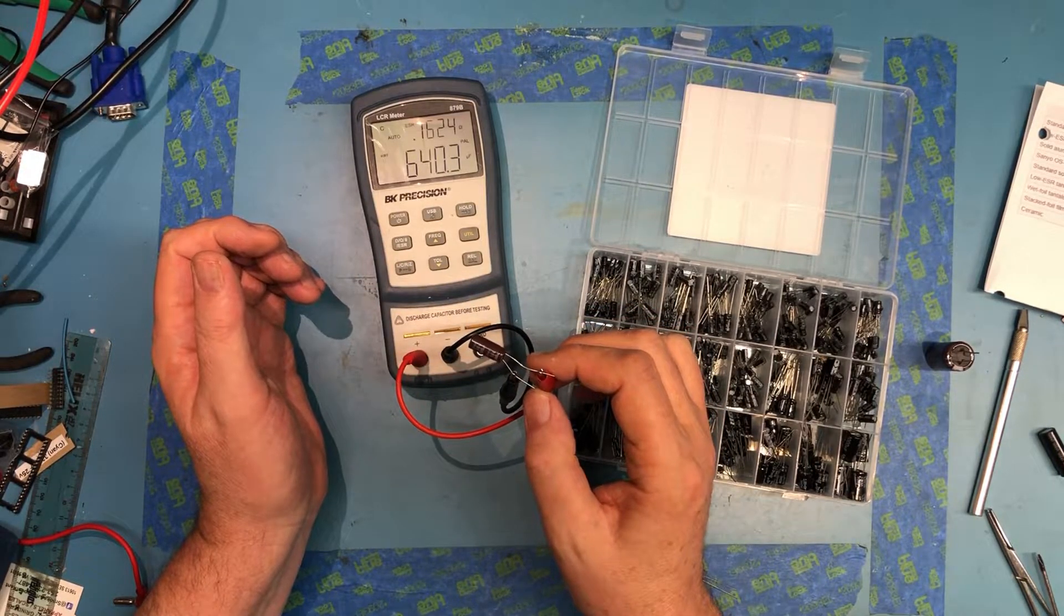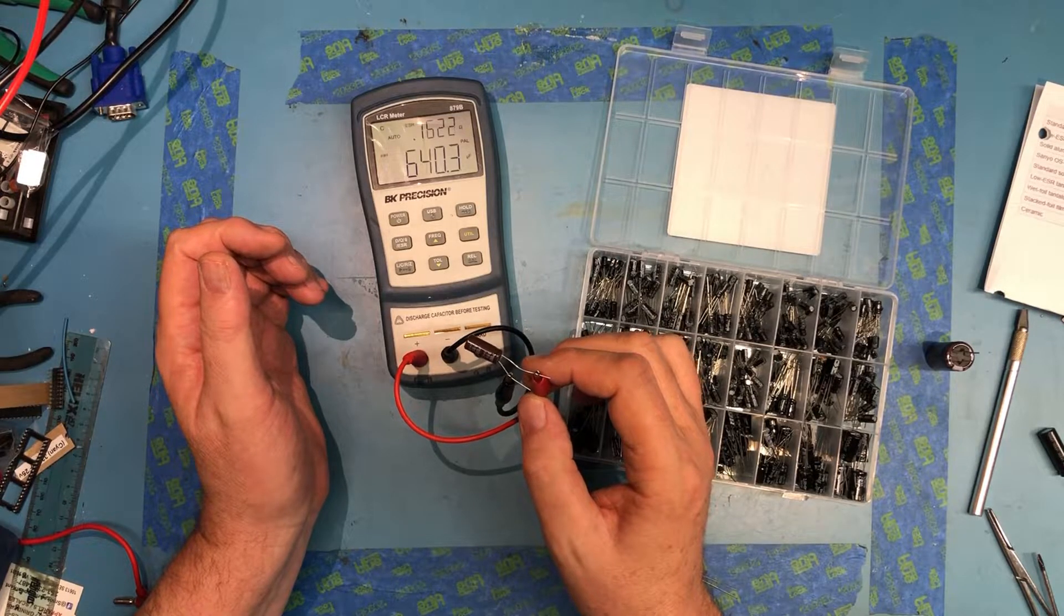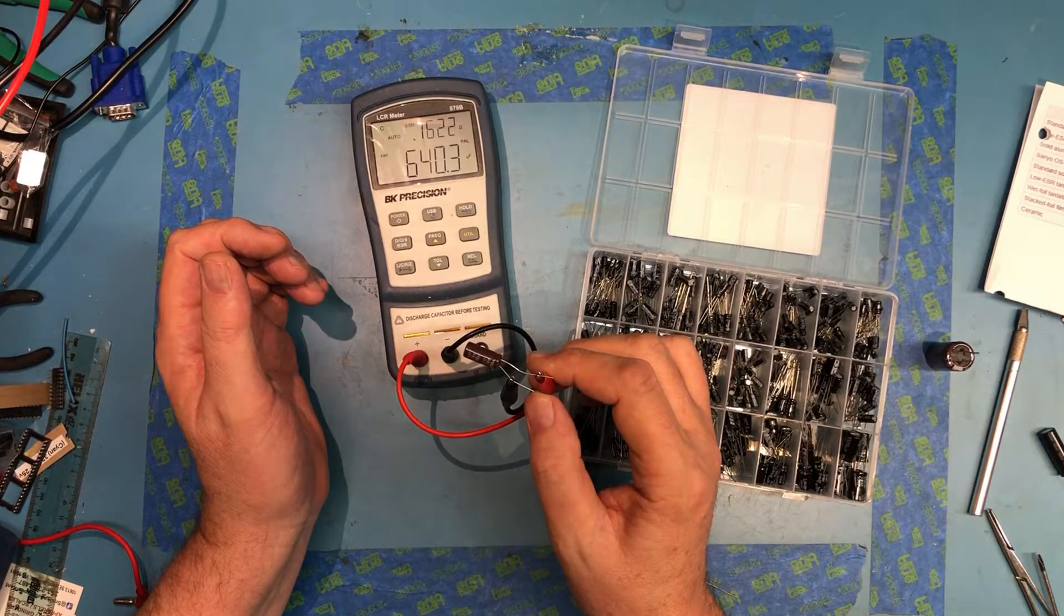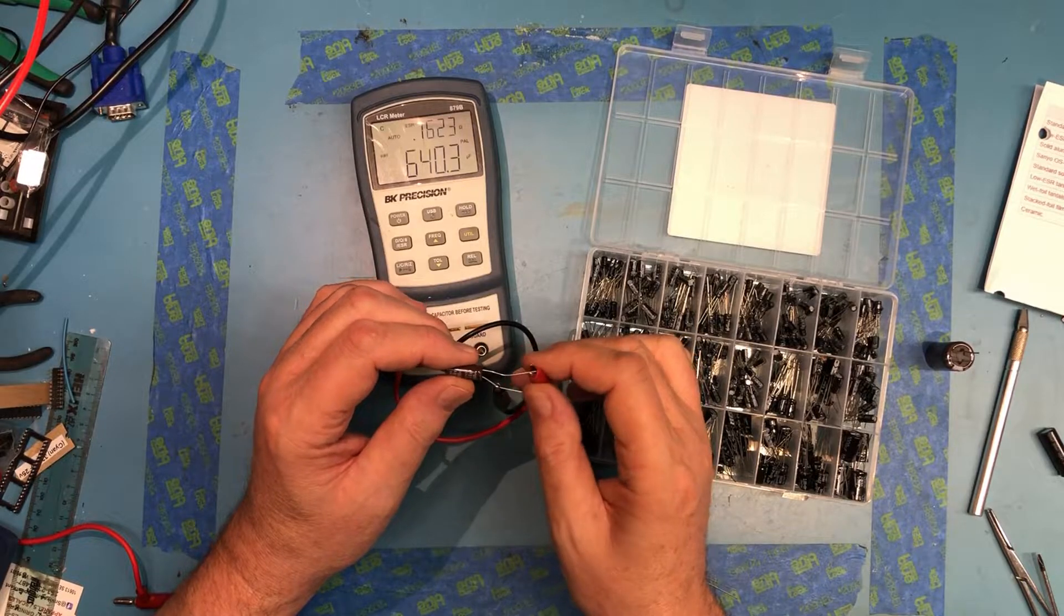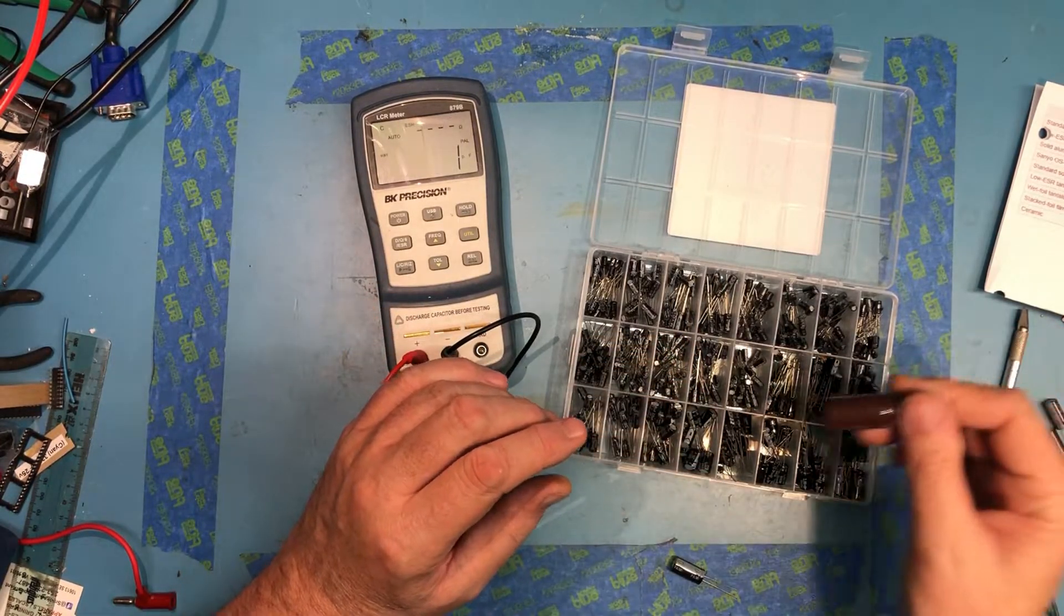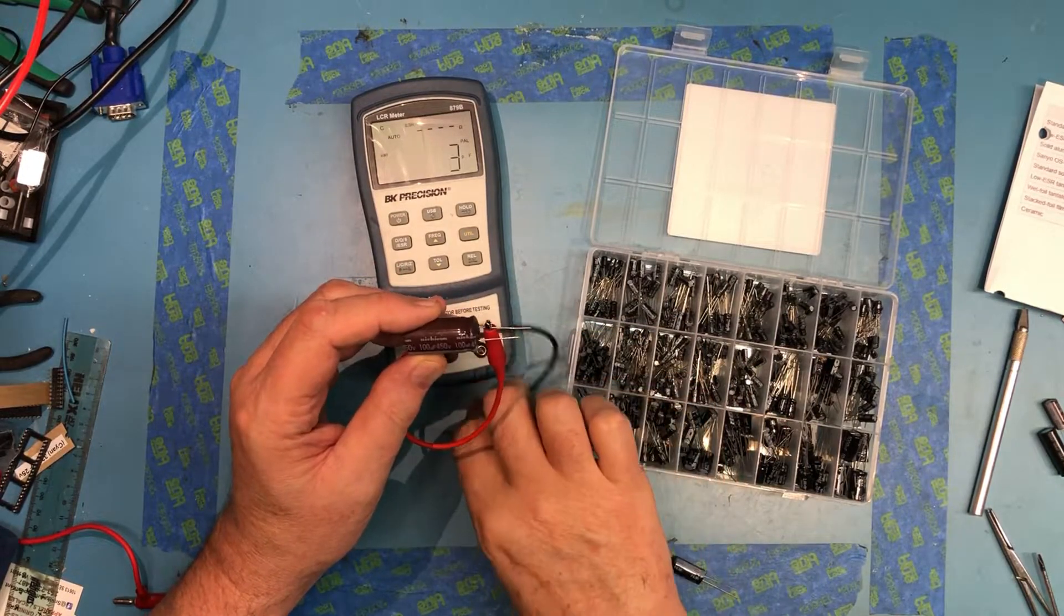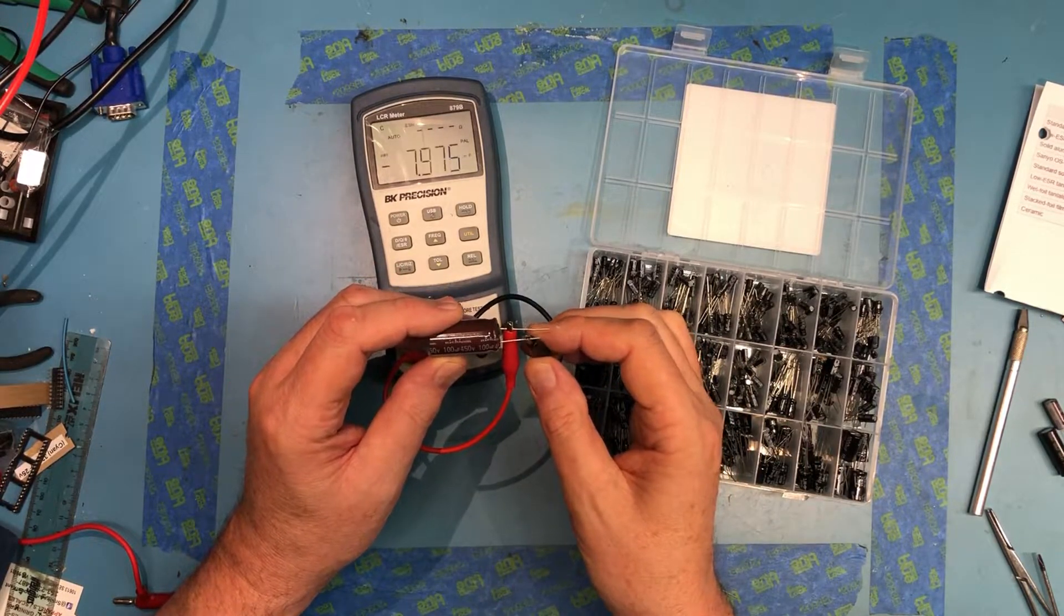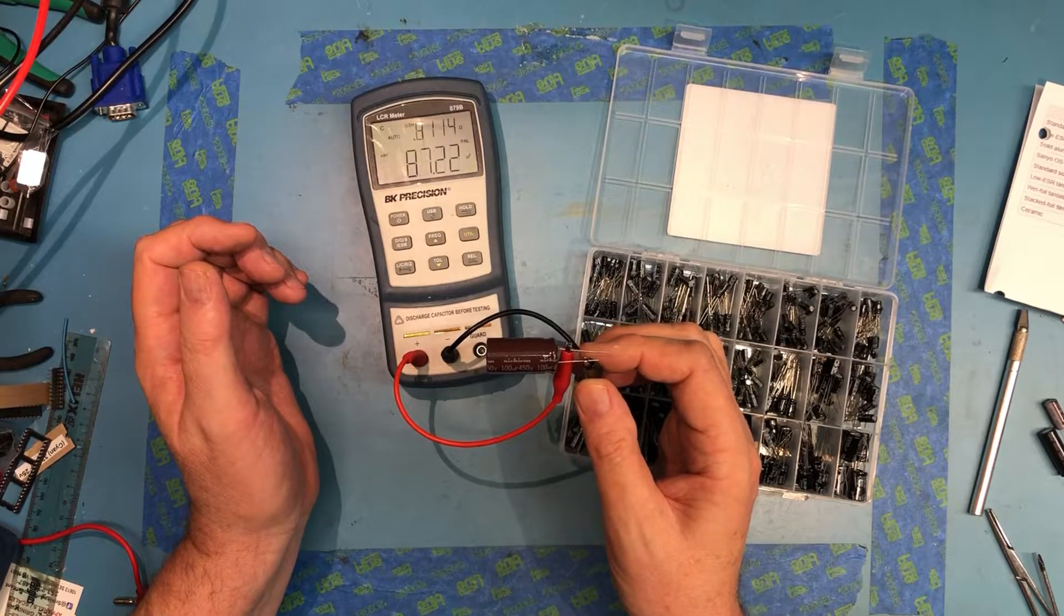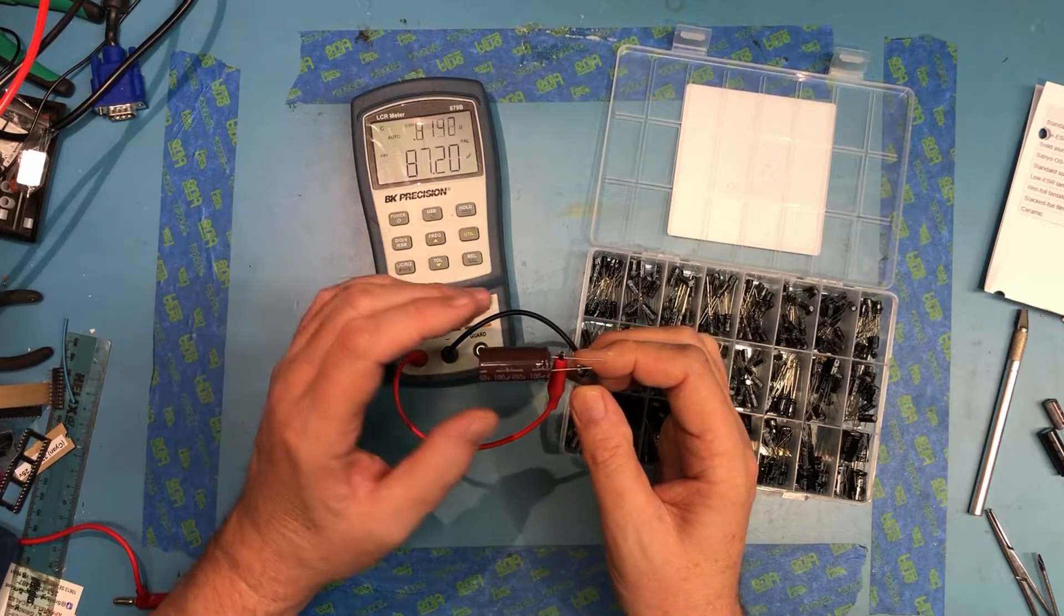Well, here's a 680 in Nichicon. Let's see where his ESR tends to fall out. You know, 0.16 ohms, really good, I believe. Measure 640, no surprise. 100 microfarad, of course, at 450 volts, it's a heck of a cap. 0.81 ohms.